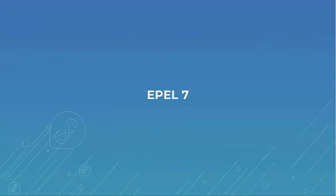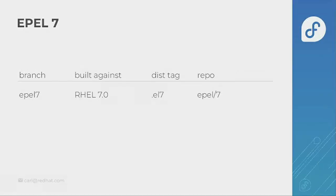To talk about what we're doing for EPL 10, I'm going to go through a little bit of history first to help it make sense about how we got to that point. We're going to look back at EPL 7 first. For EPL 7, we had the EPL 7 branch in the package source dist kit, and it would build against RHEL 7.0. It would get a dist tag of EL7 and just populate the EPL 7 repo.